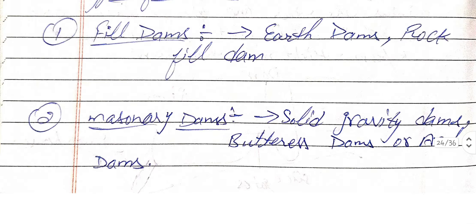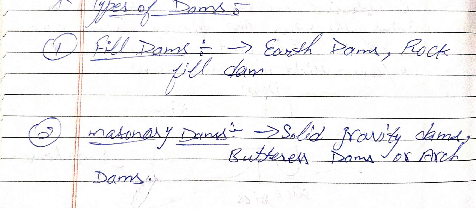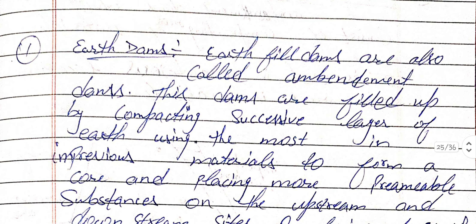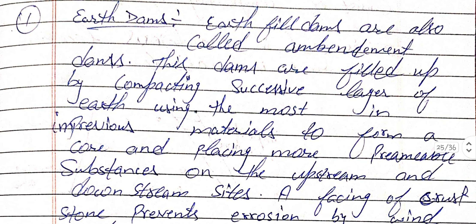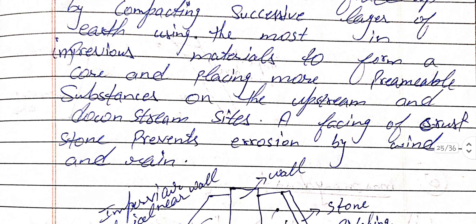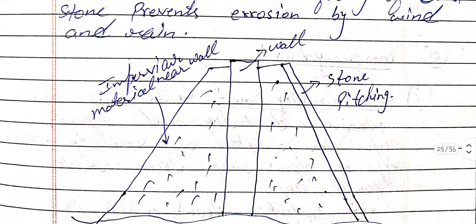Starting with the first type — fill dams. Earth fill dams are also called embankment dams. These dams are filled up by compacting successive layers of earth using impervious material to form a core, and placing more permeable substances on the upstream and downstream sides. A facing of crushed stone prevents erosion by wind and rain.